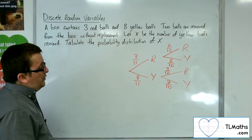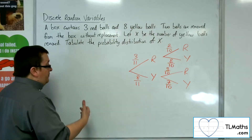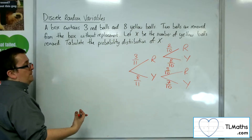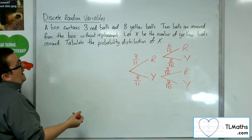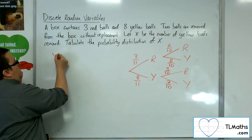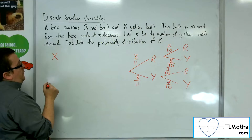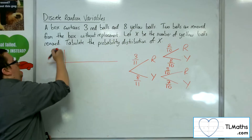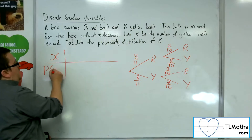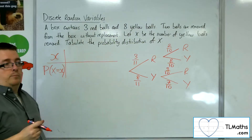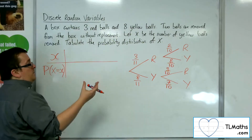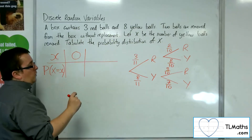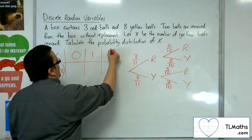We can now build up the table for the probability distribution. We have x being the number of yellow balls that can be picked out, and the probability of each of those possibilities. So x can take values: zero yellow balls pulled out, one yellow ball, or two yellow balls.